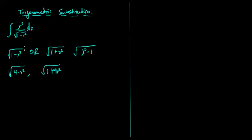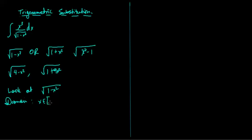If you look at this particular one — if x equals sine theta, then 1 minus x squared would be 1 minus sine squared theta, which we know is cosine squared theta. If you look at the square root of 1 minus x squared, the domain is x inside of minus 1 to 1. x equals sine theta is a good substitution because the value of sine theta is between minus 1 and 1. If you restrict theta from minus pi over 2 to pi over 2, we'll be covering a window of theta so that x runs from negative 1 up to 1.